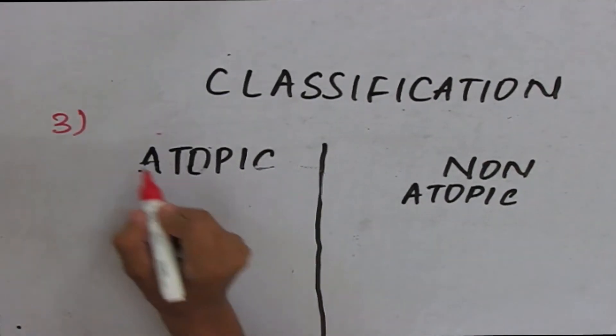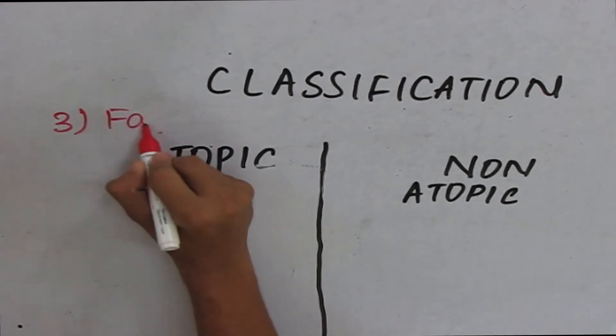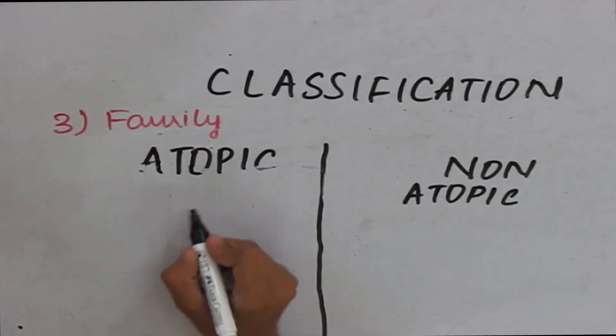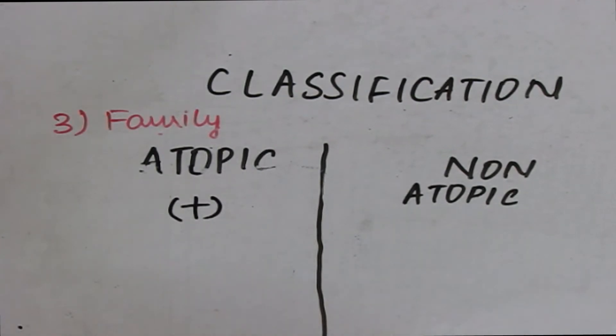The third criteria is family history. In atopic type of bronchial asthma, there is a positive family history. That is, you can see that bronchial asthma is present in the family members. And in non-atopic, we usually have a negative family history.